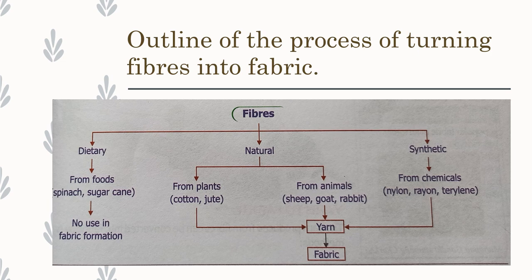In the previous section, we have already seen this flowchart. Let us discuss it all over again. We have discussed that fibers are of three types mainly: dietary fibers, natural fibers, and synthetic fibers. Dietary fibers have no use in fabric formation, and natural fibers are obtained from plants and animals. From plants, the fibers we obtain are cotton and jute, which we have discussed. Today we will discuss fibers obtained from animals, which is in the form of wool and silk, and some synthetic fibers.